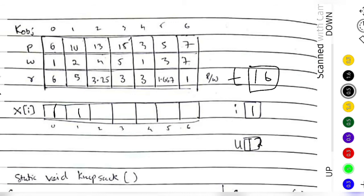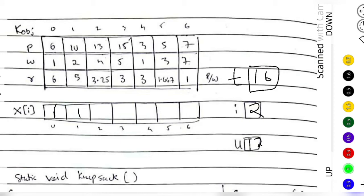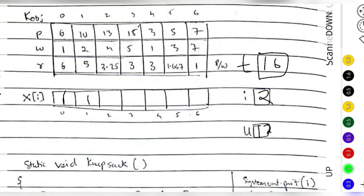Next, i becomes 2. The object has weight 4. Is 4 greater than 12? No, so we include it. We subtract 4 from 12, leaving a capacity of 8, and mark x[2] as 1. The profit from this object is 13, so total profit becomes 16 plus 13, which is 29.